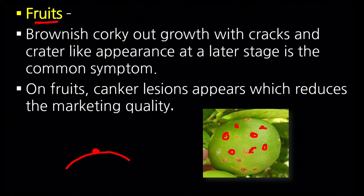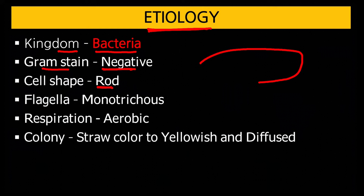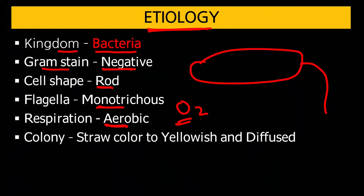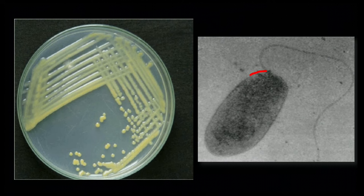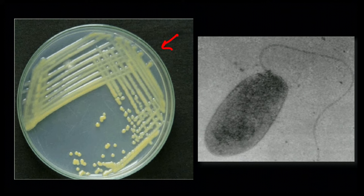Etiology of the bacteria: it belongs to the Bacteria kingdom. Its gram stain is negative. Cell shape is rod-shaped. It has a single flagellum — called monotrichous flagellum. Respiration is aerobic, meaning it requires oxygen to survive. Colony is yellow in color and diffused — as you can see, the colony is not intact but spread out, because the bacteria secretes mucus which causes the colony to remain diffused.